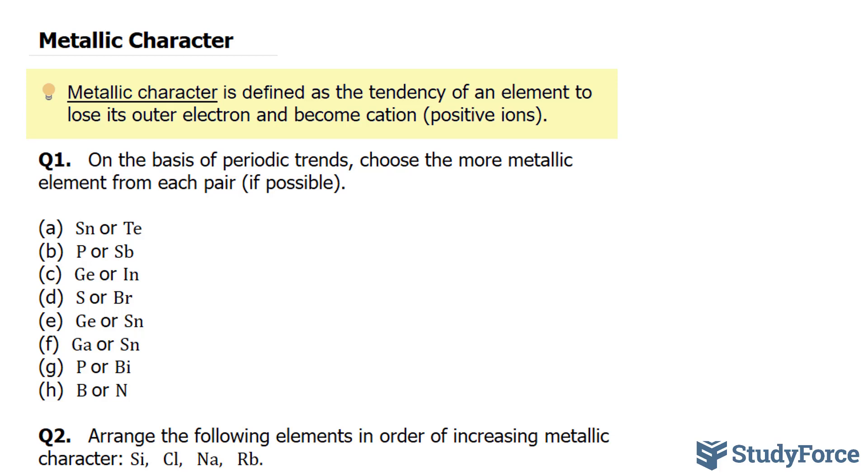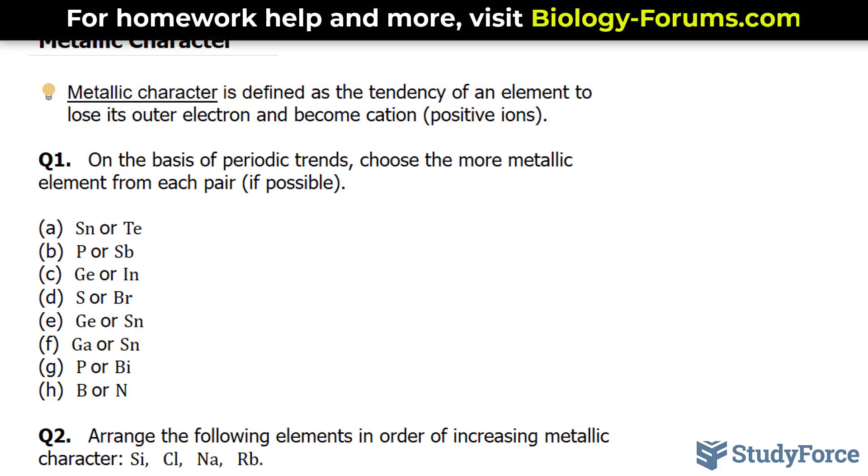Metallic character is defined as the tendency of an element to lose its outer electrons and become a cation. We've learned from past lessons that those more likely to become cations are more metallic.